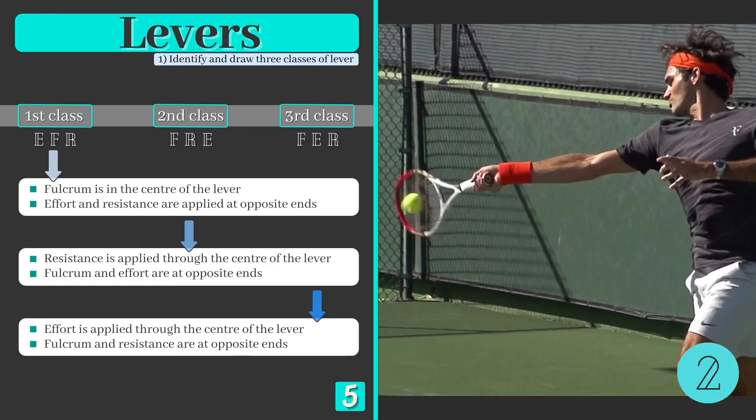A forehand drive in tennis uses a third class lever. The fulcrum is the shoulder joint, effort comes from the pectoral and deltoid muscles, and resistance from the force applied by the ball.